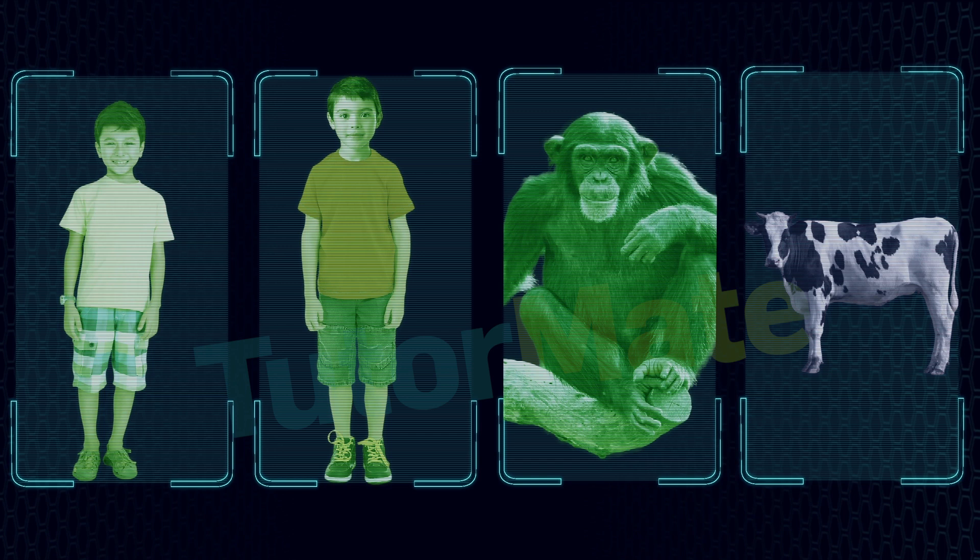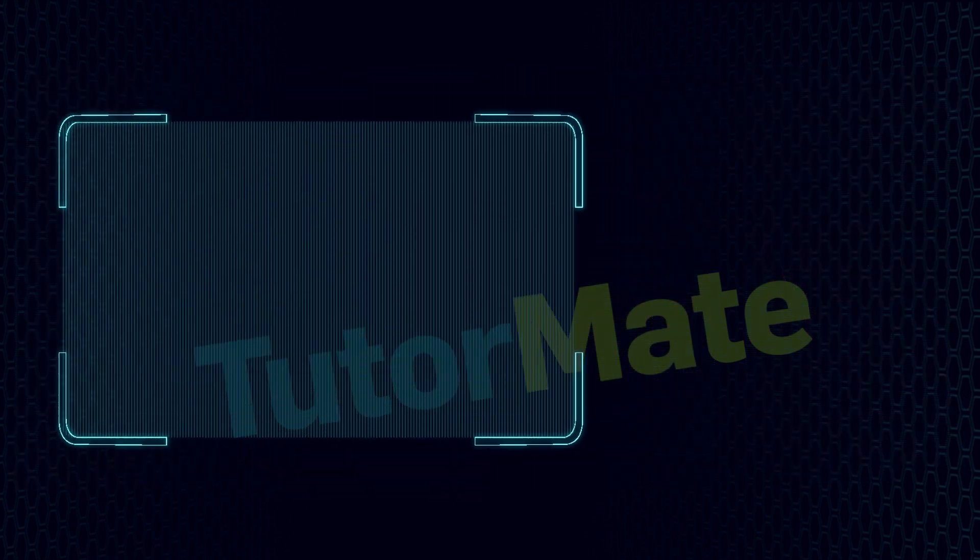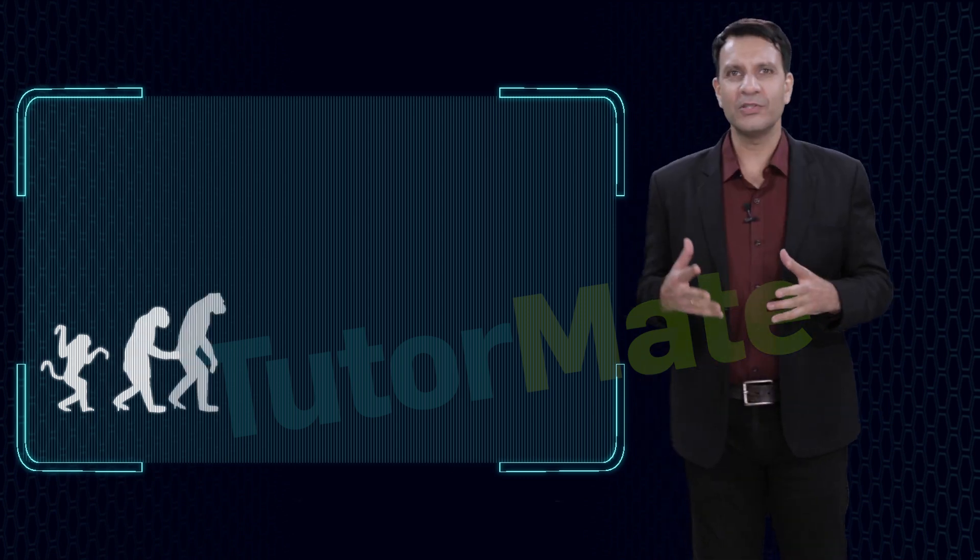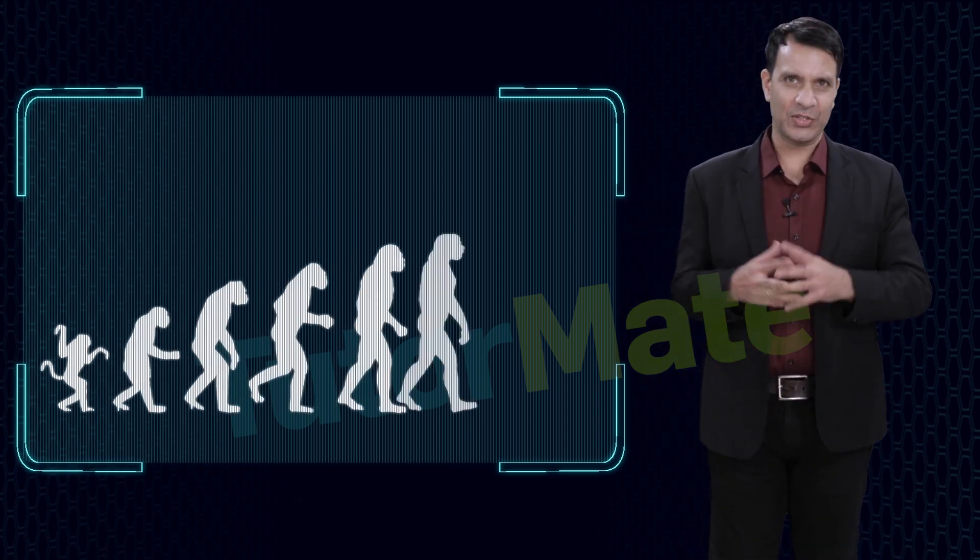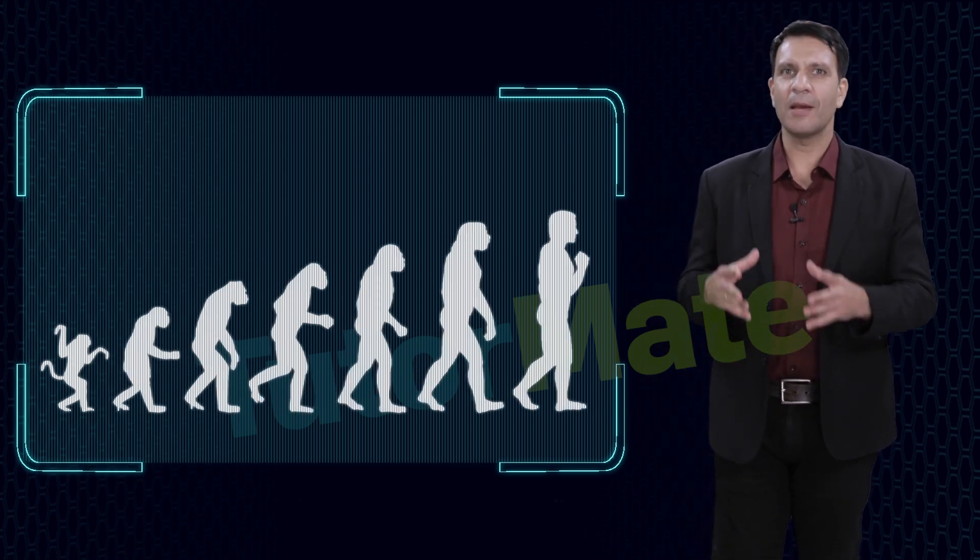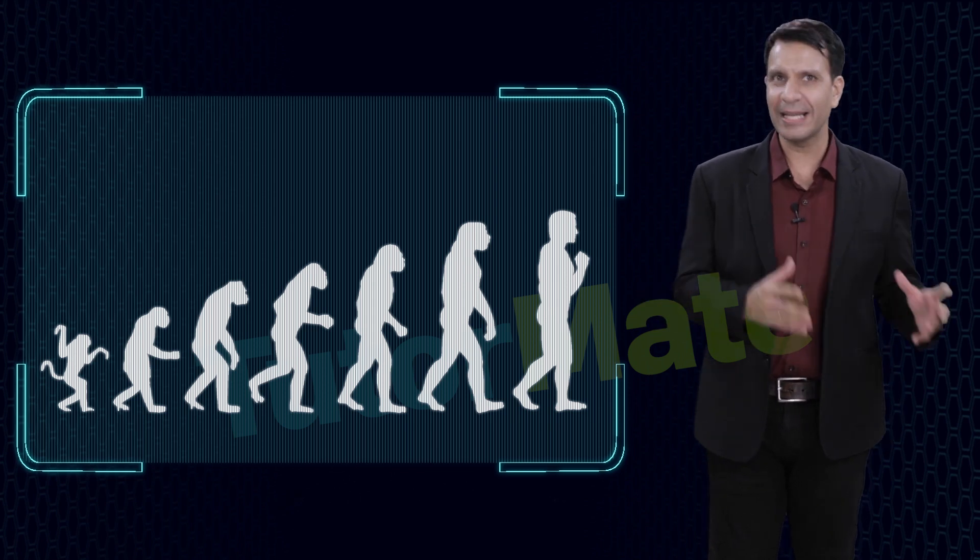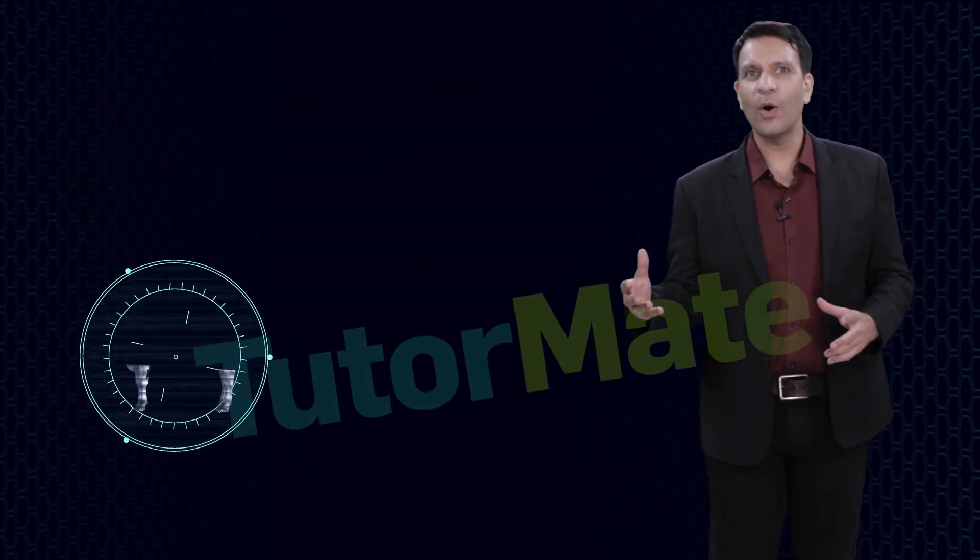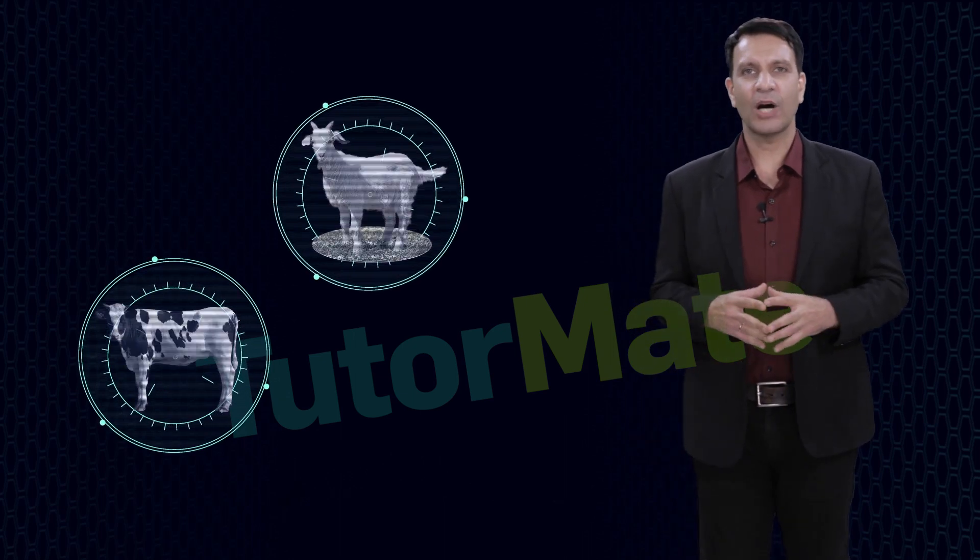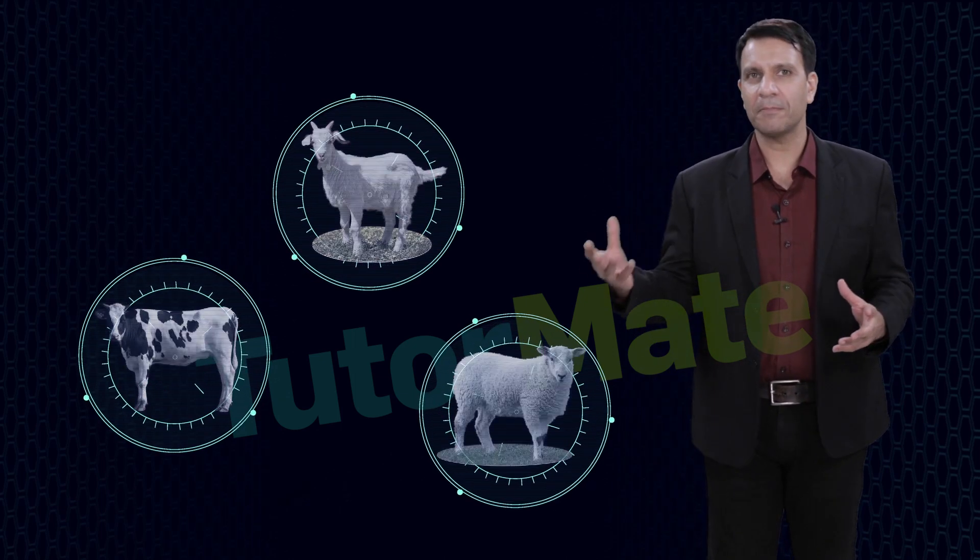Now for a fact, we already know that humans are evolved from monkeys, and that is why we share more common features with a monkey. On the other hand, a cow has similar features like a goat or a sheep.